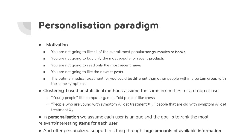Also consider medicine: the optimal medical treatment for you may be different from others in a group with the same symptoms. Classically, we use clustering-based or statistical methods that assume the same properties for a group of users. For example, you might divide users into groups like young people and recommend computer games, or old people and recommend chess — but that's not ideal, as some older people are into computer games and some young people like chess.